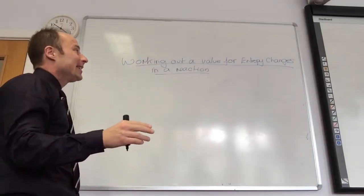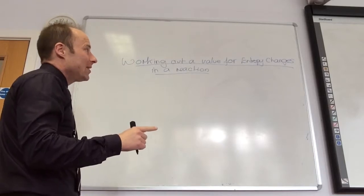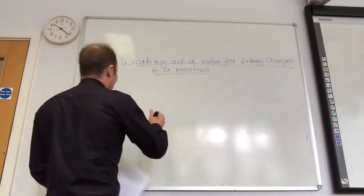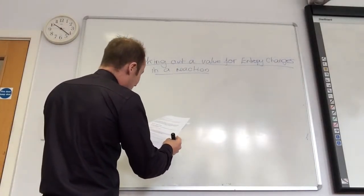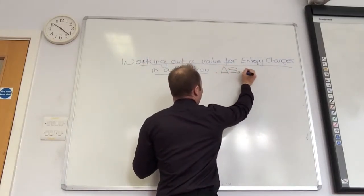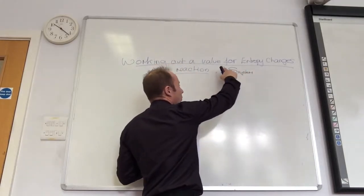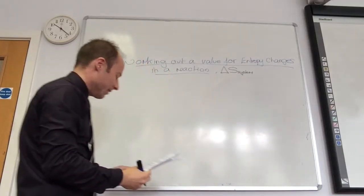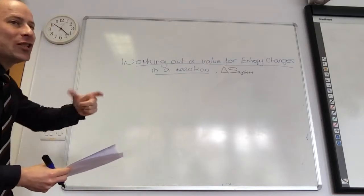The first thing to point out: the symbol for entropy is S, and so changes in entropy are given the symbol delta S. We call this delta S system. Delta S is the change in entropy of the system — entropy changes are delta S.